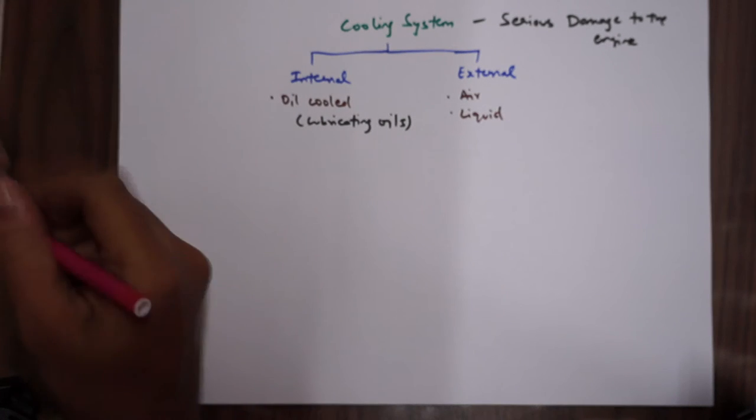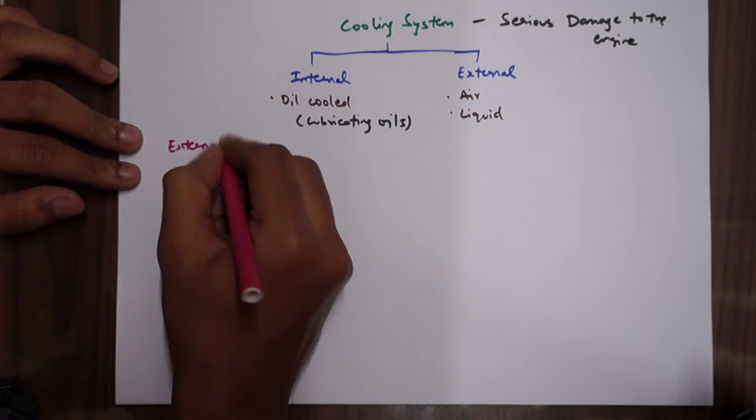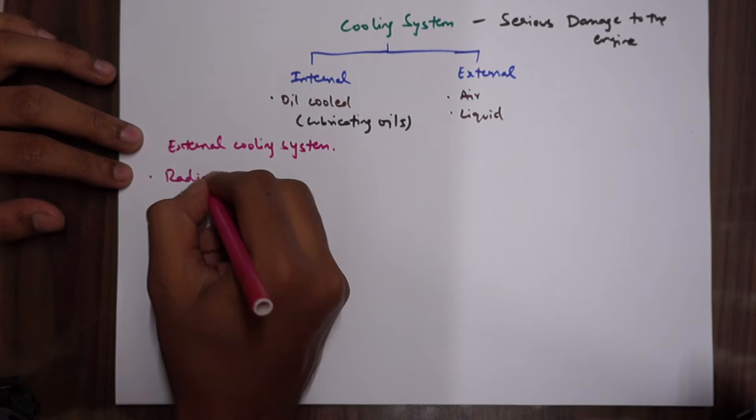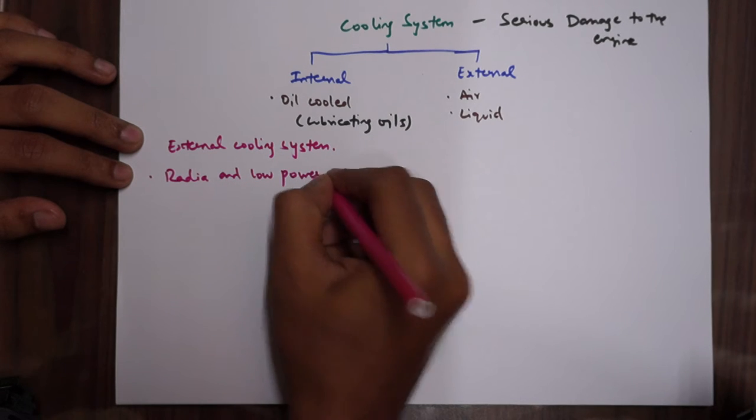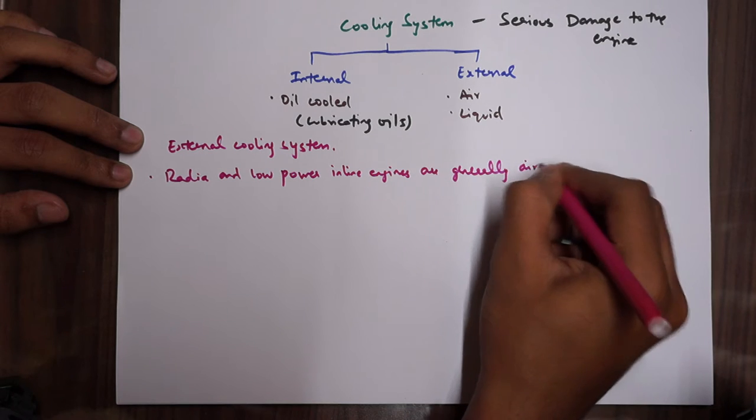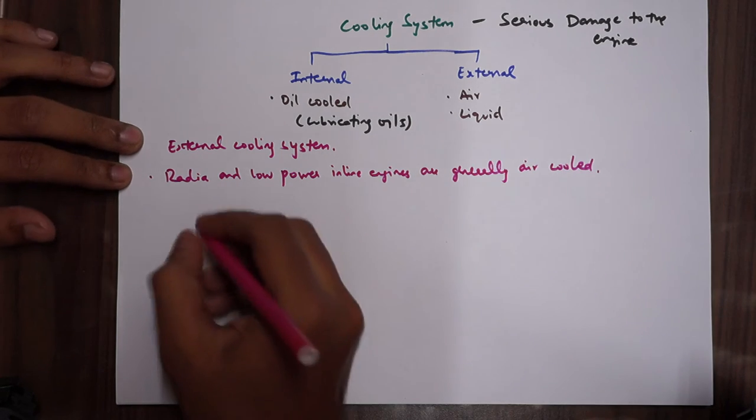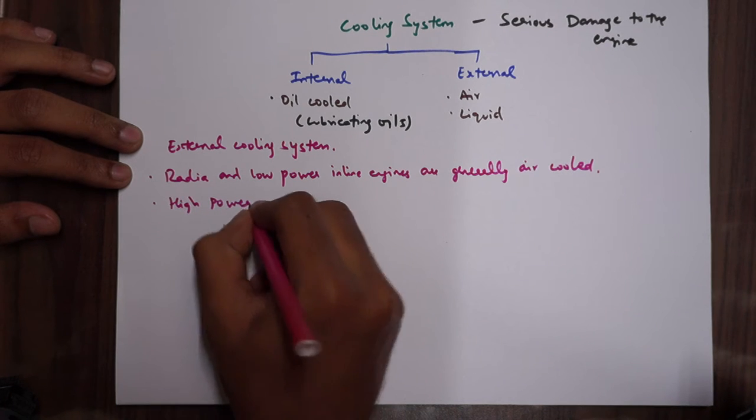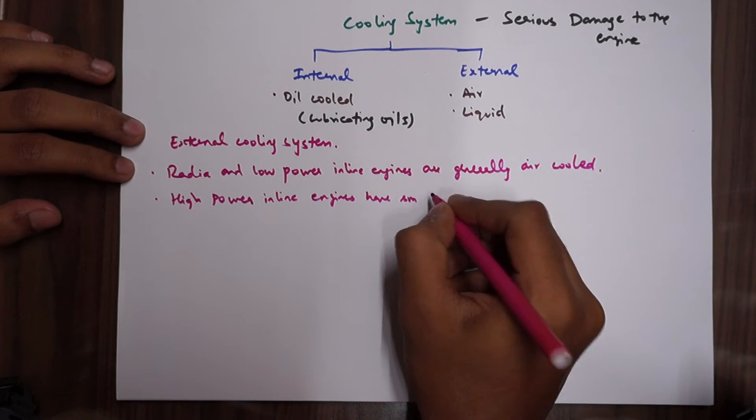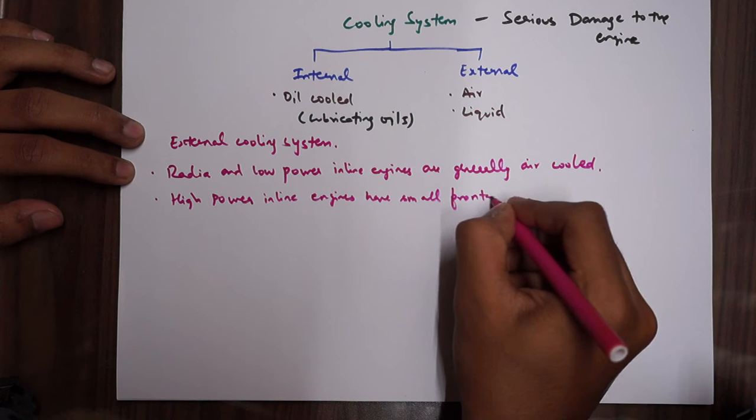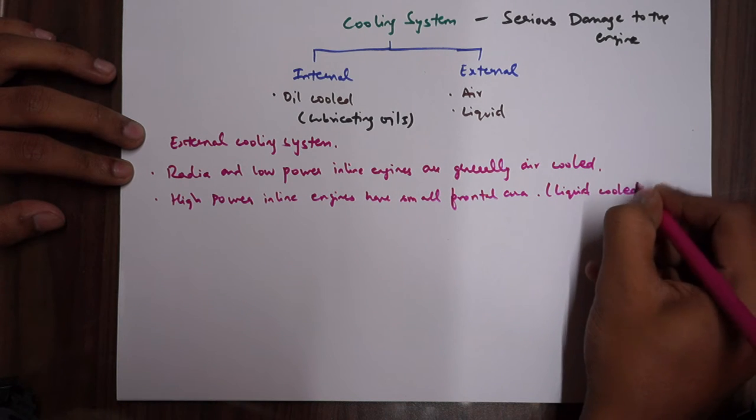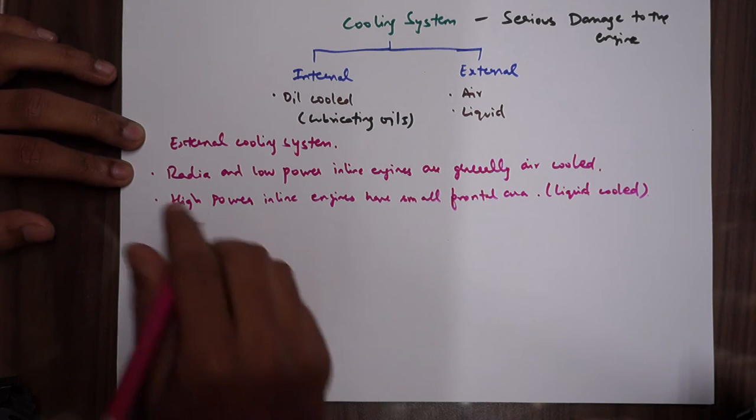The cooling can be done externally by air cooling and liquid cooling. Radial and low power inline engines are generally air cooled. High power inline engines have small frontal area and therefore they are liquid cooled because they don't have much area for air to flow in.